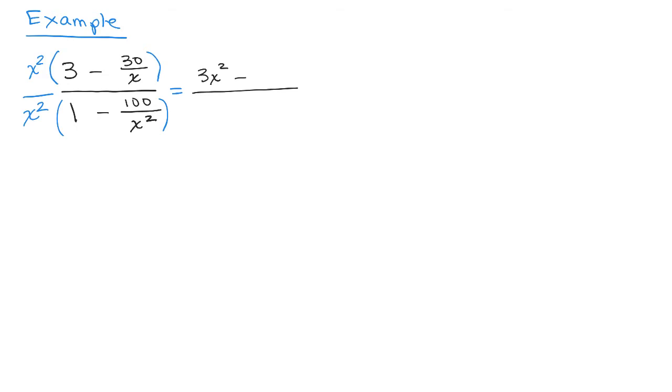Now it doesn't matter if you write the X squared in front of the fraction or after it. Just to show you it doesn't make any difference, I'm going to write it as 30 over X times X squared. You can do it either way.